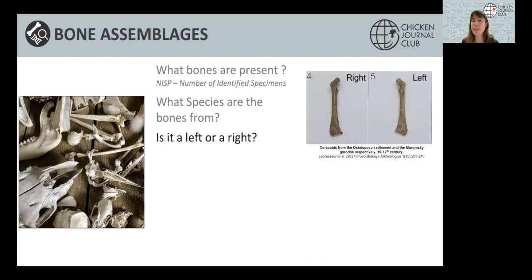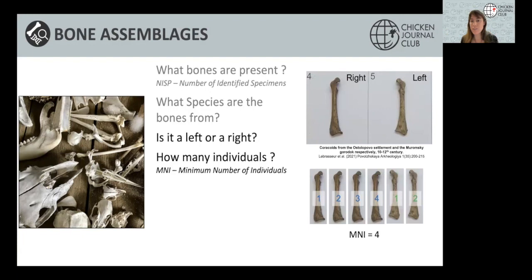Once you have the species, you can determine if the bone is left or right, which tells you how many individuals were on the site. For example, if you have four right coracoids and two left coracoids, your minimum number of individuals is four, because there is only one right coracoid per chicken — so four right coracoids means four chickens.